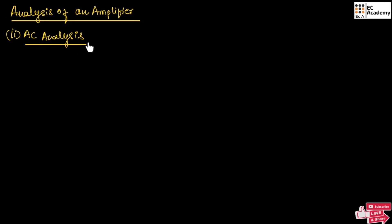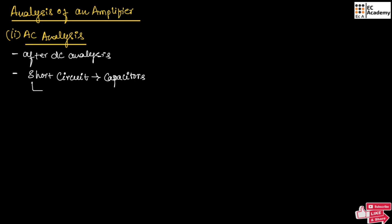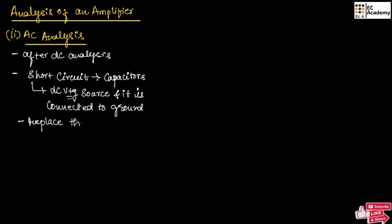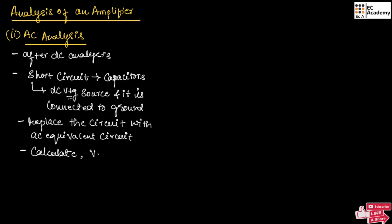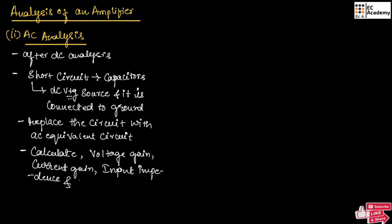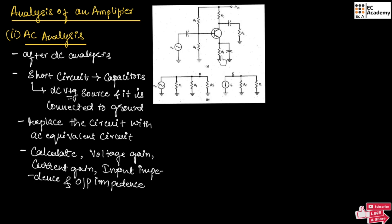Now, let us understand the AC analysis. The AC analysis is done after DC analysis. To draw an AC equivalent circuit, we need to short-circuit the capacitors and also short-circuit the DC voltage source and connect it to ground. Then we need to replace the transistor with its AC equivalent circuit. In AC analysis, we can calculate the voltage gain, current gain, input impedance, and output impedance. This is an example of an AC equivalent circuit.